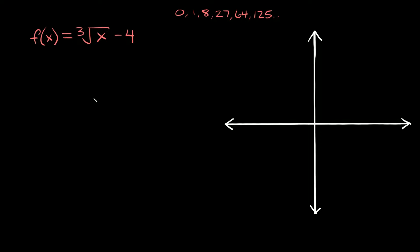The nice thing about cube root functions is that you can take the cube root of positive and negative numbers. The other thing you want to keep in mind are your perfect cubes. Here's a little list of them: 0, 1, 8, 27, 64, 125, and so on. All these numbers are numbers that we can easily take the cube root of, so we want to try and include these numbers.